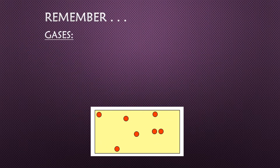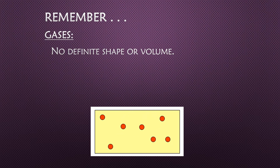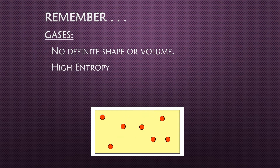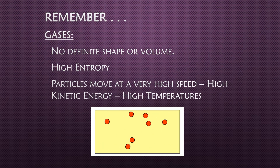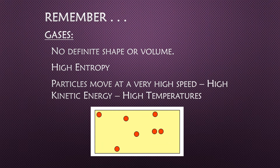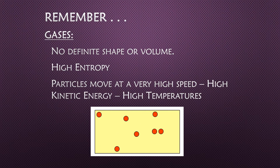When we talk about gases, they don't have any definite shape or volume — they take the shape and volume of whatever container they're in. They have very high entropy, meaning their particles are not organized. Because the particles are super distant from each other, they move at very high speed, giving them high kinetic energy, and therefore higher temperatures since temperature is average kinetic energy.